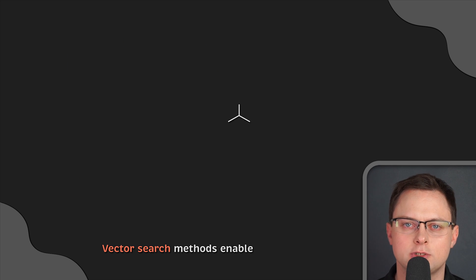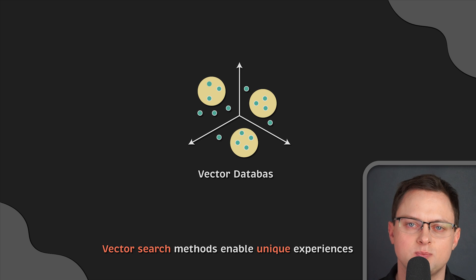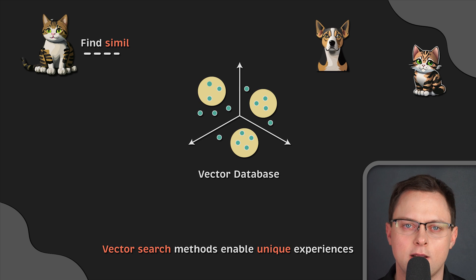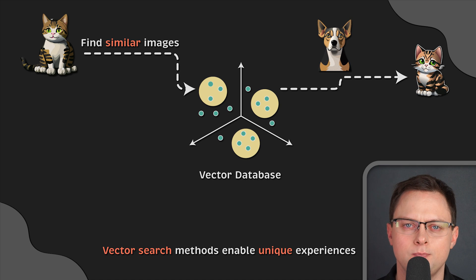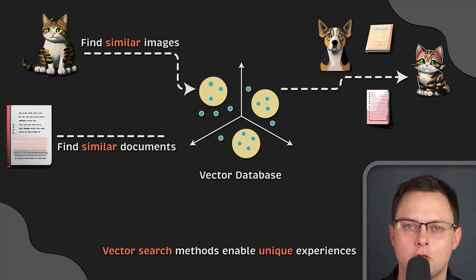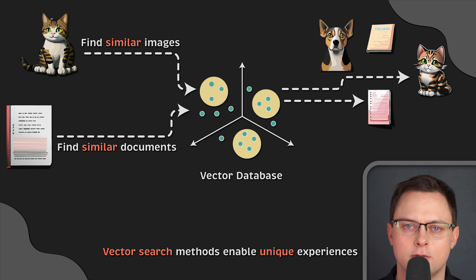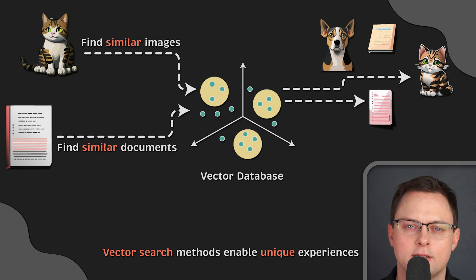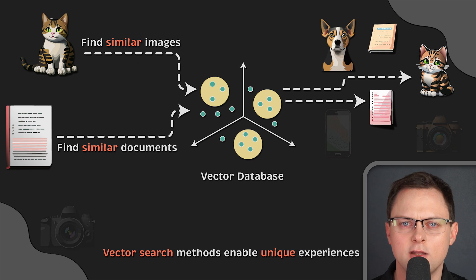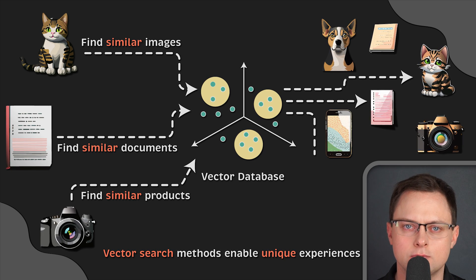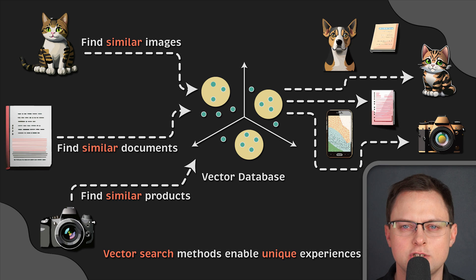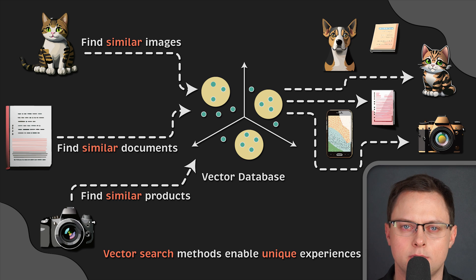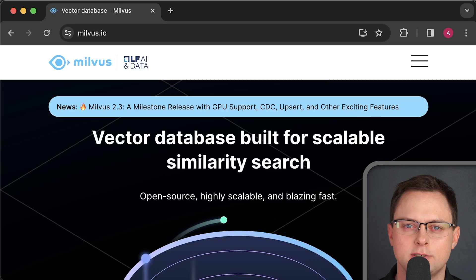Vector search methods enable unique experiences such as taking a photograph with your smartphone and searching for similar images. You can also find documents that are similar to a given document based on topic and sentiment, and find products similar to a given product based on their features and ratings. One open-source vector database you can try is Milvus.